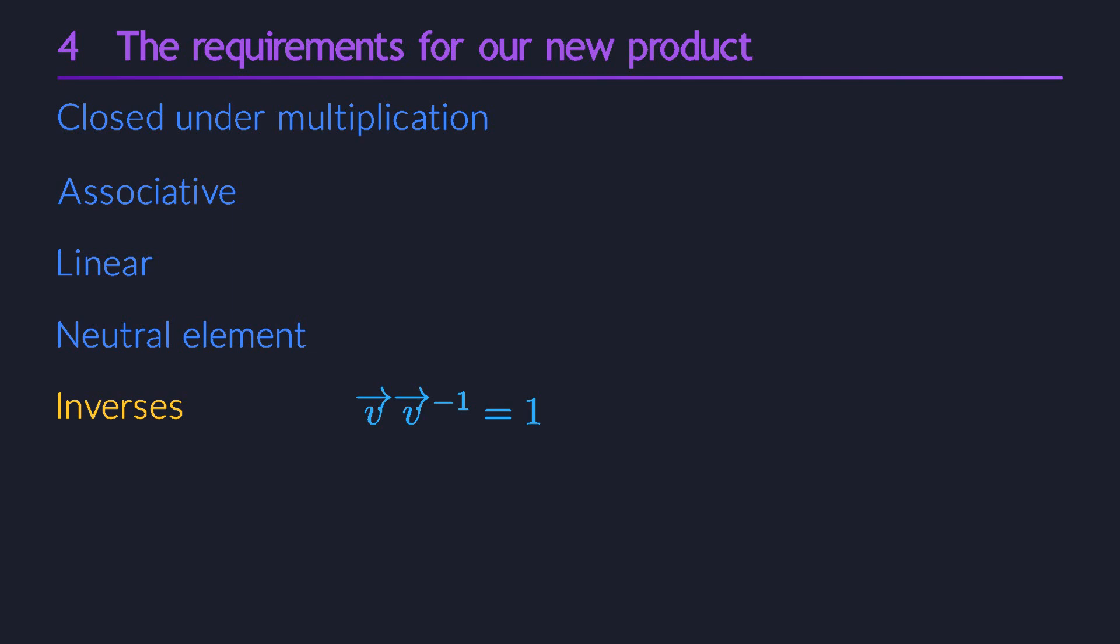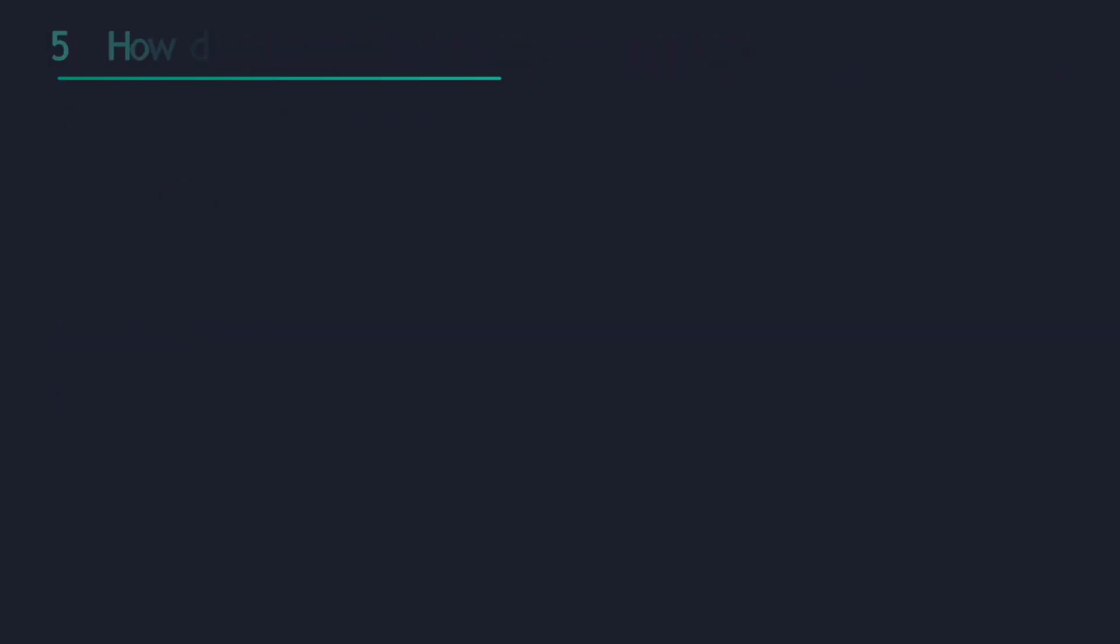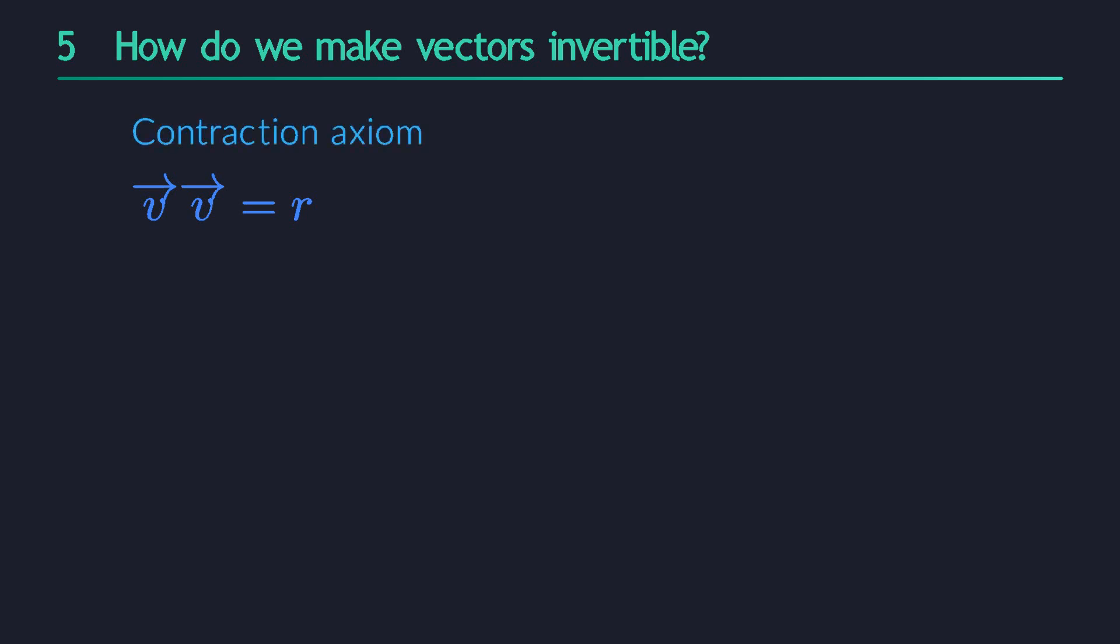Okay cool, at this point only one big question remains. How exactly do we satisfy the final demand? How do we construct a product that makes all non-zero vectors invertible? Well, there might be many strategies to make that happen. The strategy we pick in geometric algebra is really simple. We demand that every vector must square to a real number. You will often see this referred to as the contraction axiom, and it's the one decision that sets geometric algebra apart from other systems. In the rest of the series we will see that everything else follows from this simple specific choice.